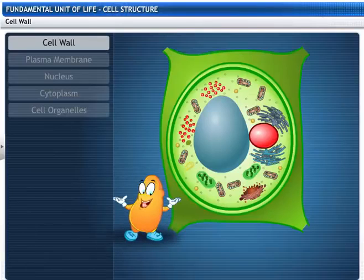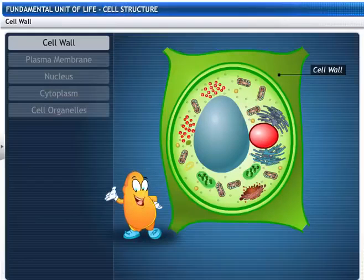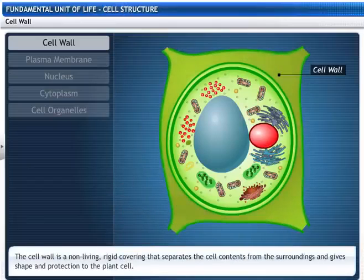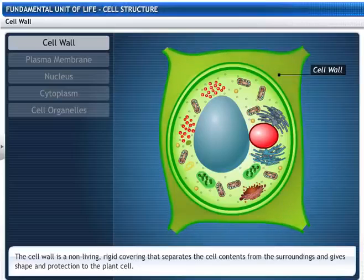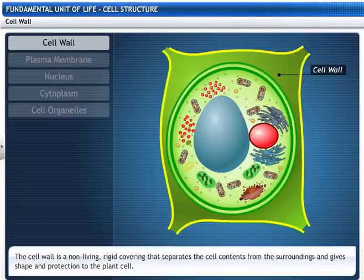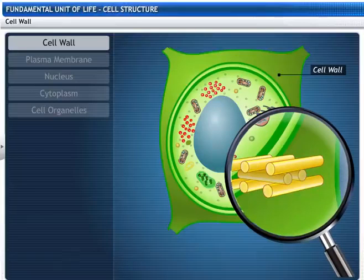Look at the cell and notice the cell wall. The cell wall is the outermost covering, which is non-living and rigid. It is seen only in a plant cell. It separates the cell contents from the surroundings and gives shape and protection to the cell. It is composed of cellulose and is permeable.